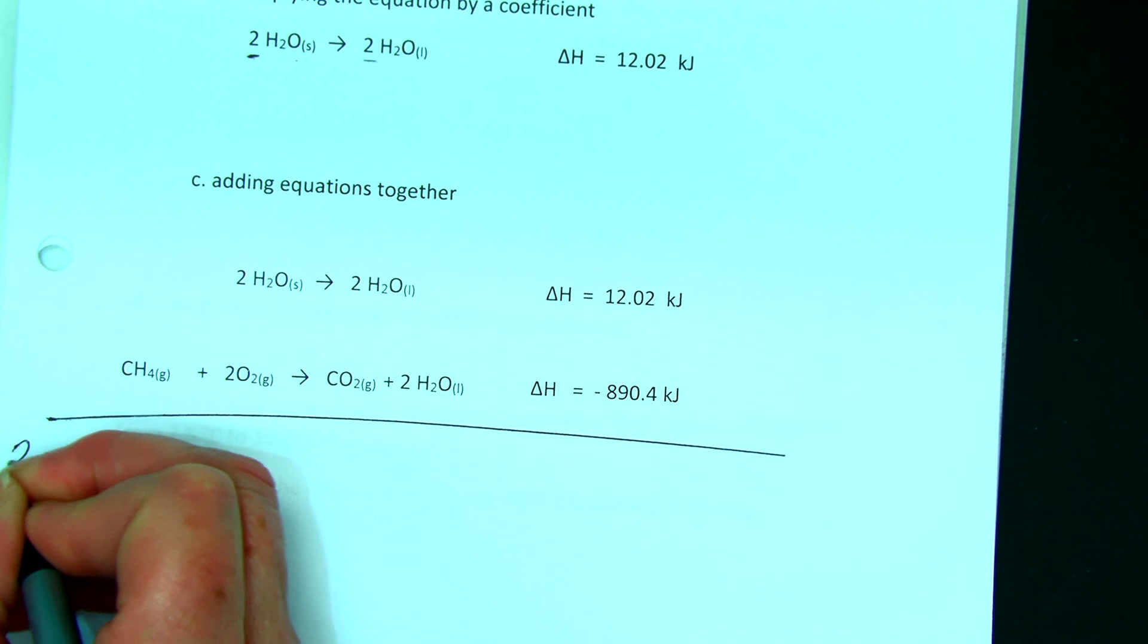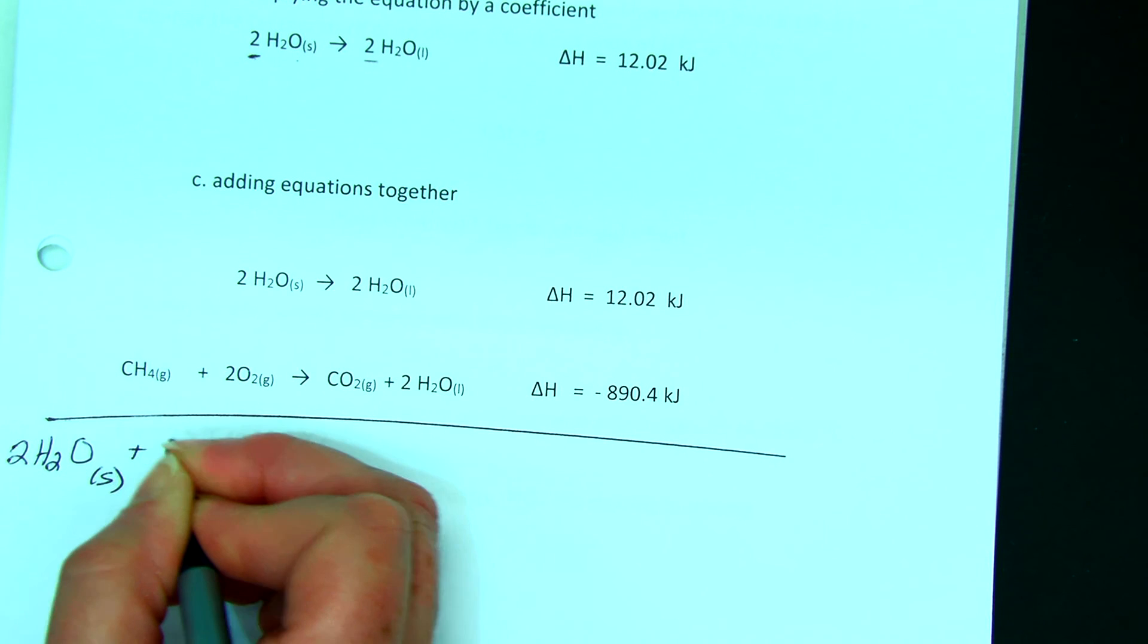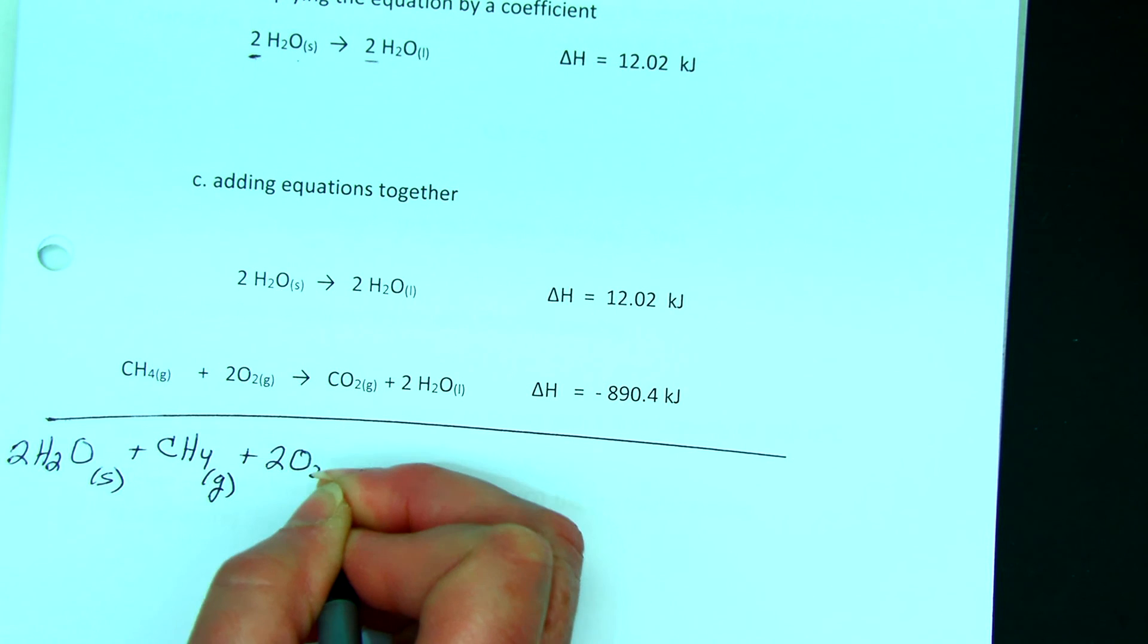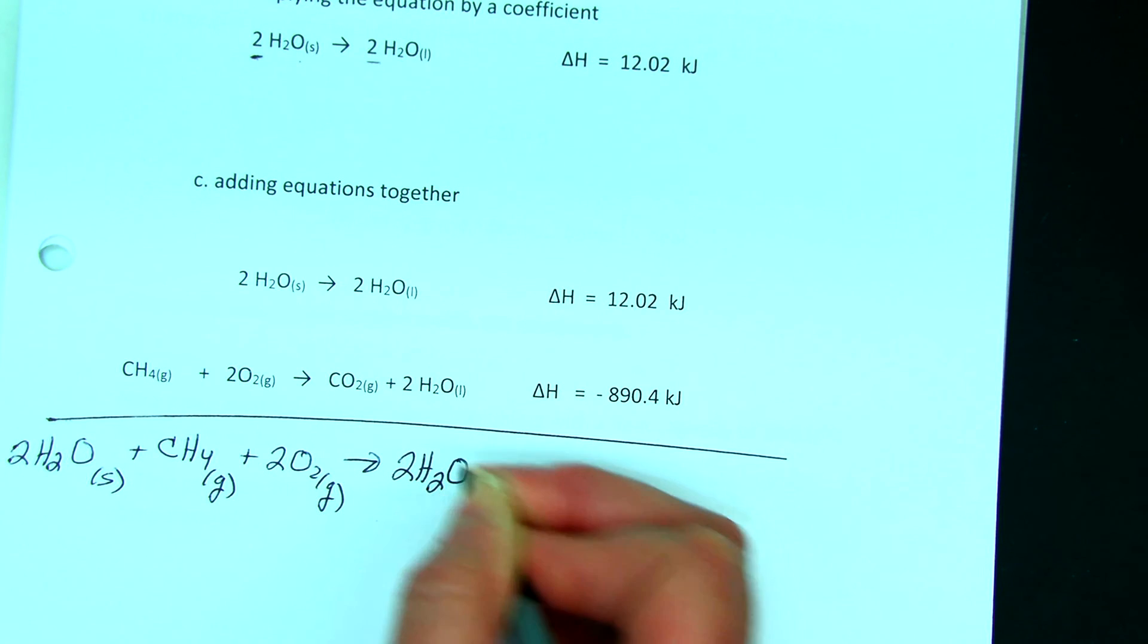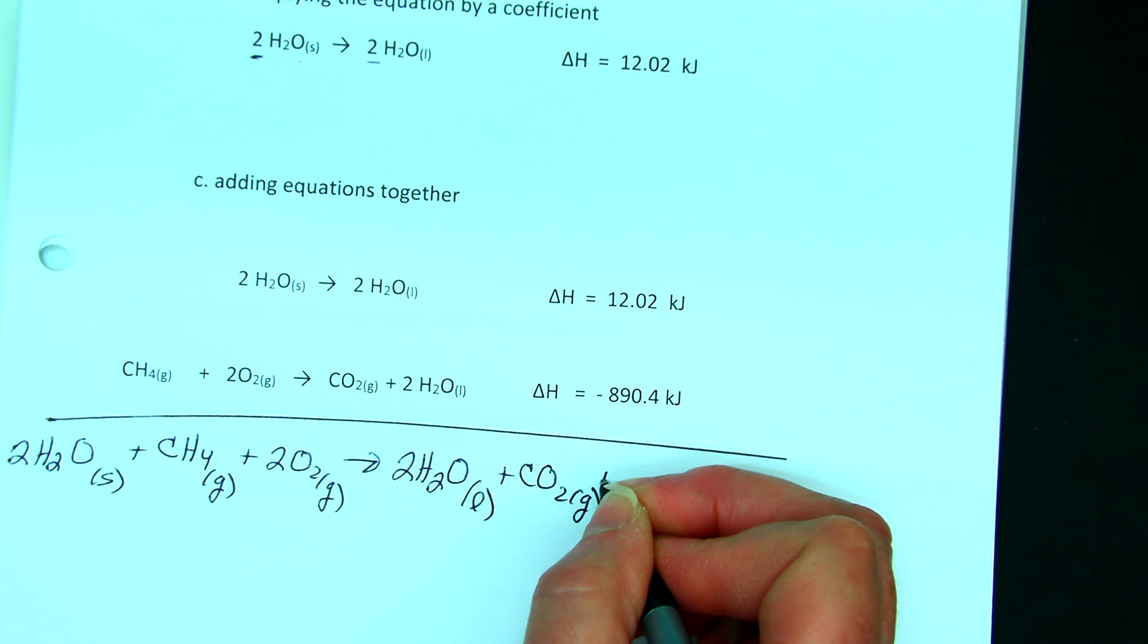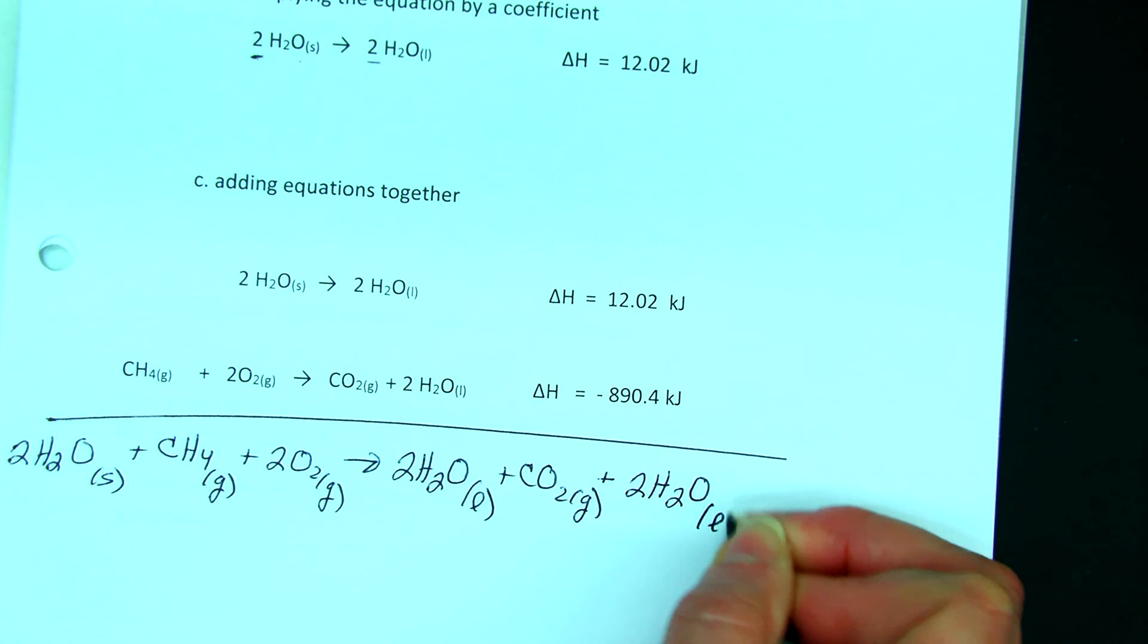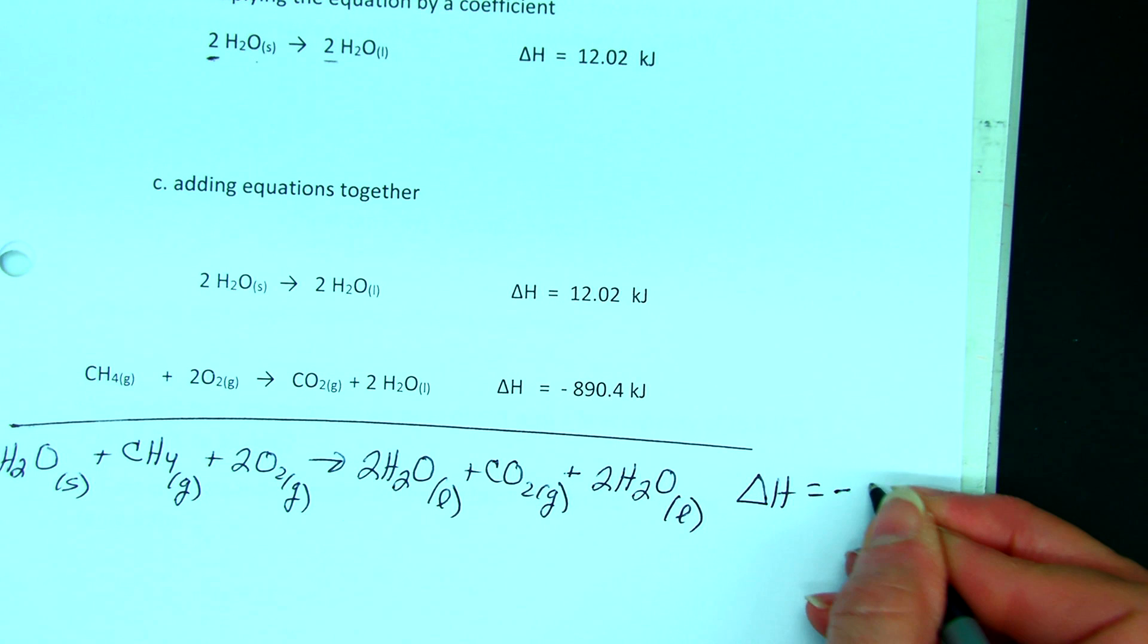So I have 2 moles of water solid plus 1 mole of methane gas plus 2 oxygen gas yields 2 water liquid plus carbon dioxide gas plus 2 water liquid. And now delta H, I just add these two numbers together and I get negative 878.4 kilojoules.